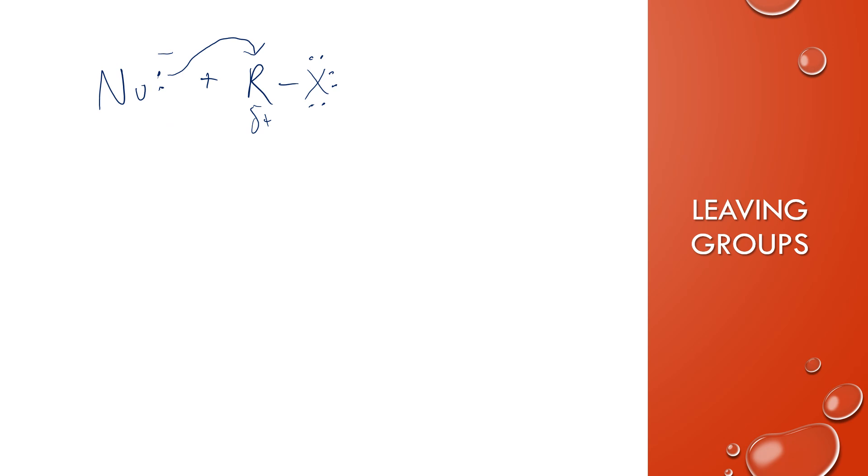That means that the carbon has too many electrons now. So what it's going to do is this bond is going to lose those two electrons and give them to the halogen or the leaving group. It's usually halogens. That way, your net result is the nucleophile is now attached to the carbon and the leaving group is by itself. And you can see both of the electrons from the original bond are now with the leaving group.